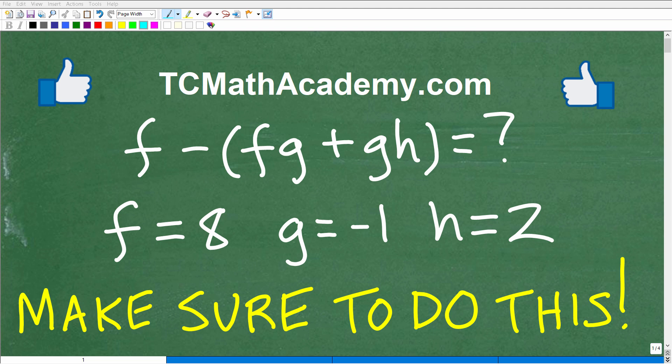Okay, so so many students do not do this simple little thing that will cause them to get a problem like this wrong. And this is a very basic type of algebra problem. Of course, I'm going to hold off on telling you what that simple little thing is. But let me go ahead and explain the problem to you. We have f minus parentheses fg plus gh in parentheses. We want to evaluate this variable expression for these given values of the respective variables.